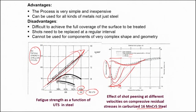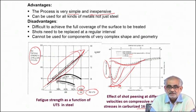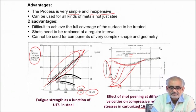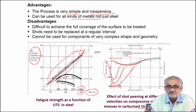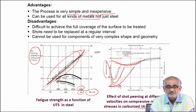Shot peening has been used for over 100 years because the process is very simple, inexpensive, and can be easily applied without a very high level of skill. Most importantly, it can be used on all kinds of metals — not just steel — including non-ferrous metals, cast iron, metallic coatings, and welded joints. It is usually confined to metals because plastic deformation and generation of higher dislocation density are responsible for creation of residual compressive stress.